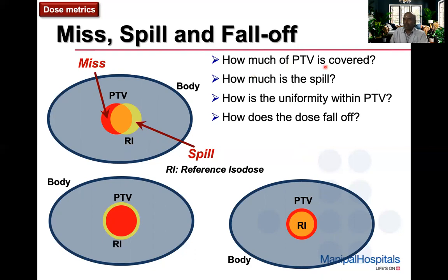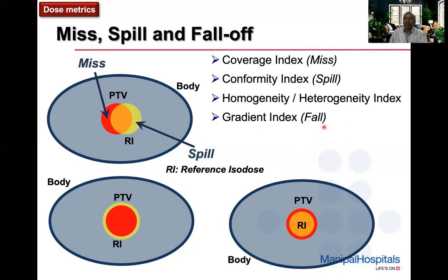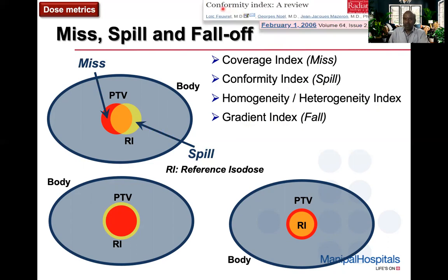We need to know how much of the PTV is covered, how much is the spill, how uniform the dose is within the PTV, and how the dose falls off away from the PTV. The coverage index tells us about the miss, the conformity index about spillage, the homogeneity and heterogeneity index about uniformity within the PTV, and the gradient index about dose fall-off. For anyone wanting to know more about conformity index, I recommend the paper that appeared in the Red Journal in 2006 — there are multiple definitions, so be careful about which you use.